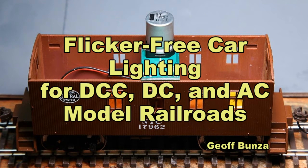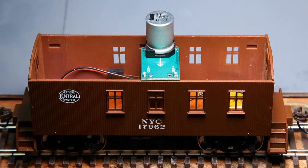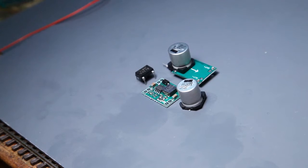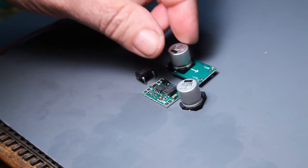This is a short video about implementing flicker-free car lighting in different kinds of model railroad cars using a small module that you can see here. It's composed of three pieces.